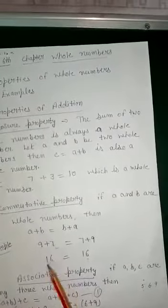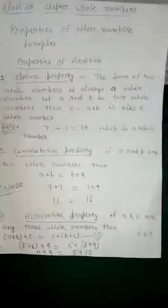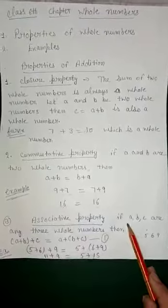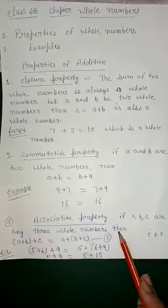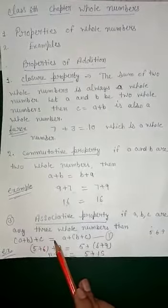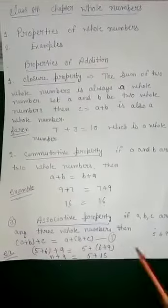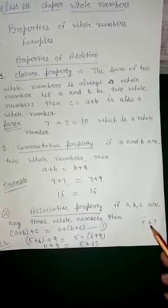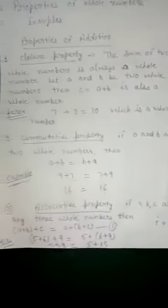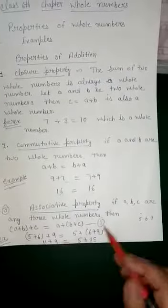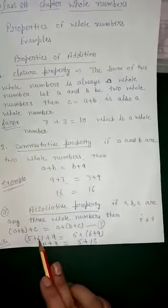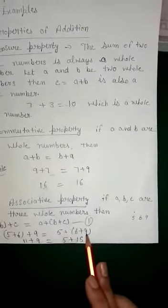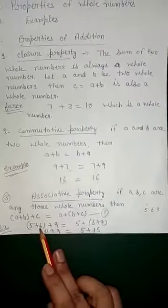The third property is the associative property. If a, b, c are any three whole numbers, then (a + b) + c = a + (b + c). We take three whole numbers: a = 5, b = 6, and c = 9. Putting these into the equation, we have (5 + 6) + 9 = 5 + (6 + 9). We have brackets, so firstly we solve the bracket.